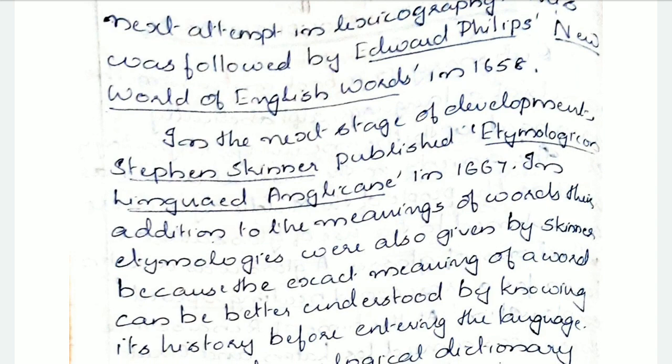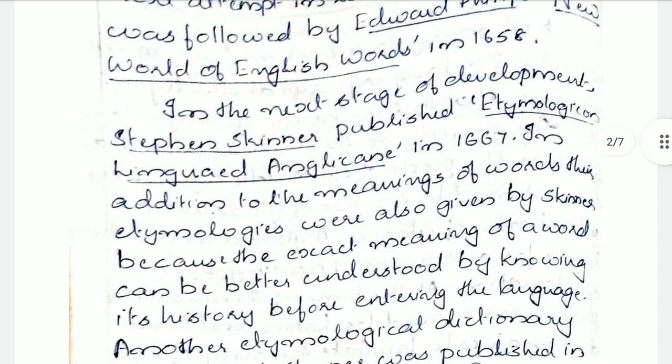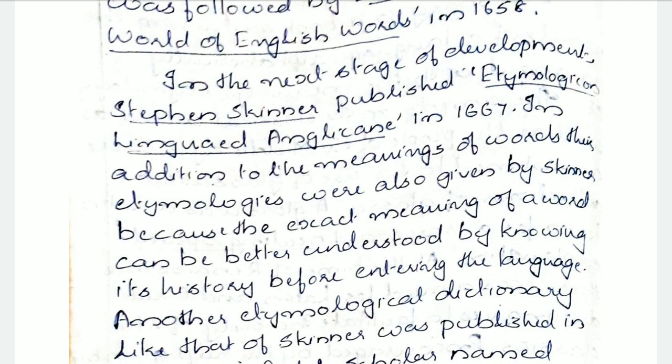The name seems interesting — Etymologicon Linguae Anglicanae. In addition to the meanings of the words, their etymologies were also given by Skinner. Etymology means your effort to find the origin of the meaning of a particular word — how the word got its own meaning. These etymologies were given because the exact meaning of a word can be better understood by knowing its history before entering the language. We have already discussed how meanings changed in the study of semantics. So this history was also given in a nutshell in Stephen Skinner's dictionary.